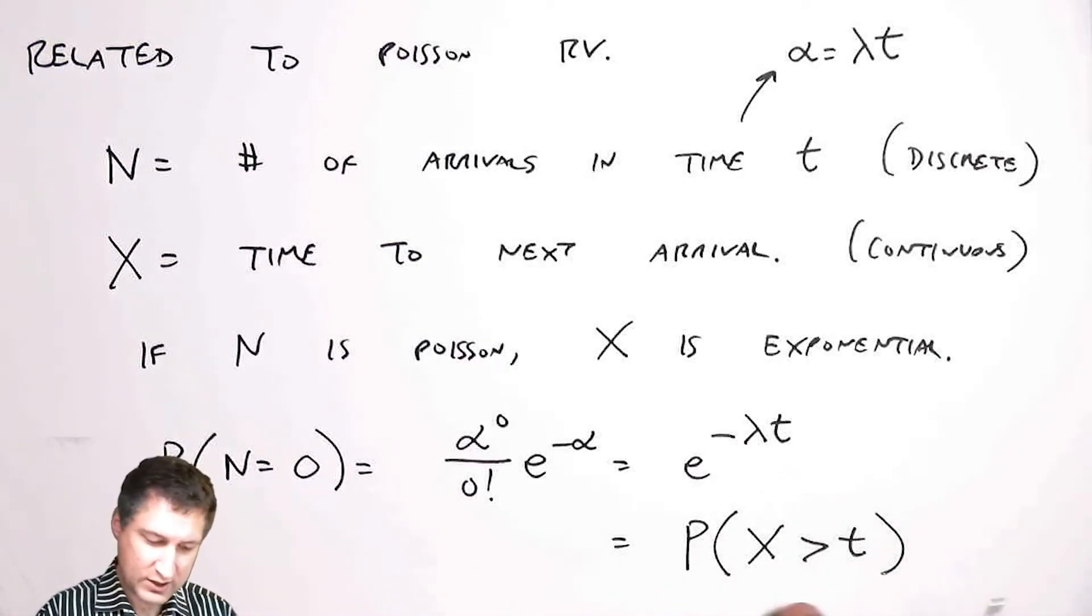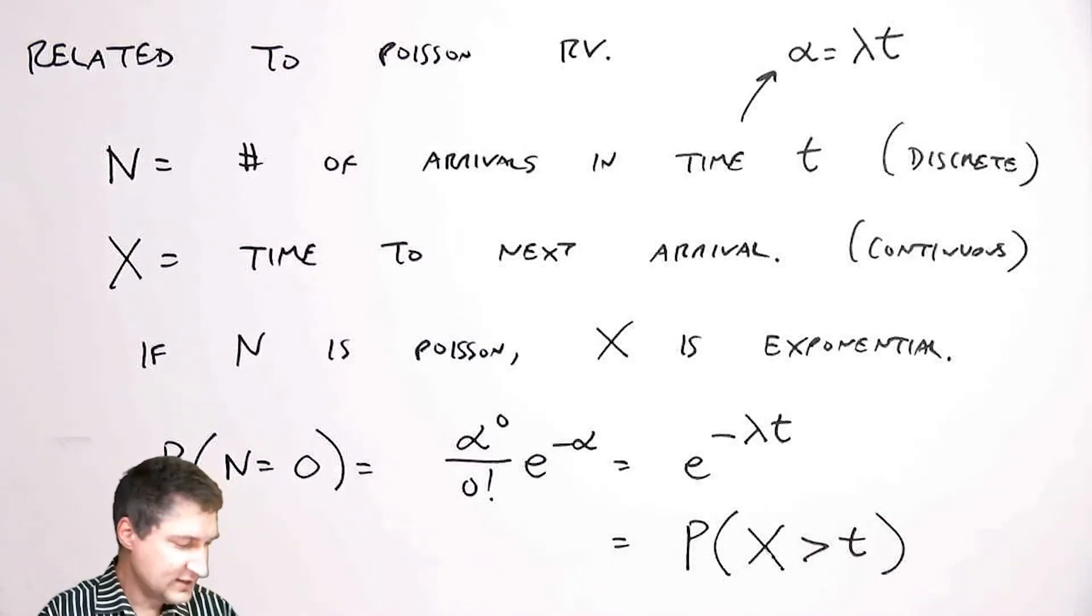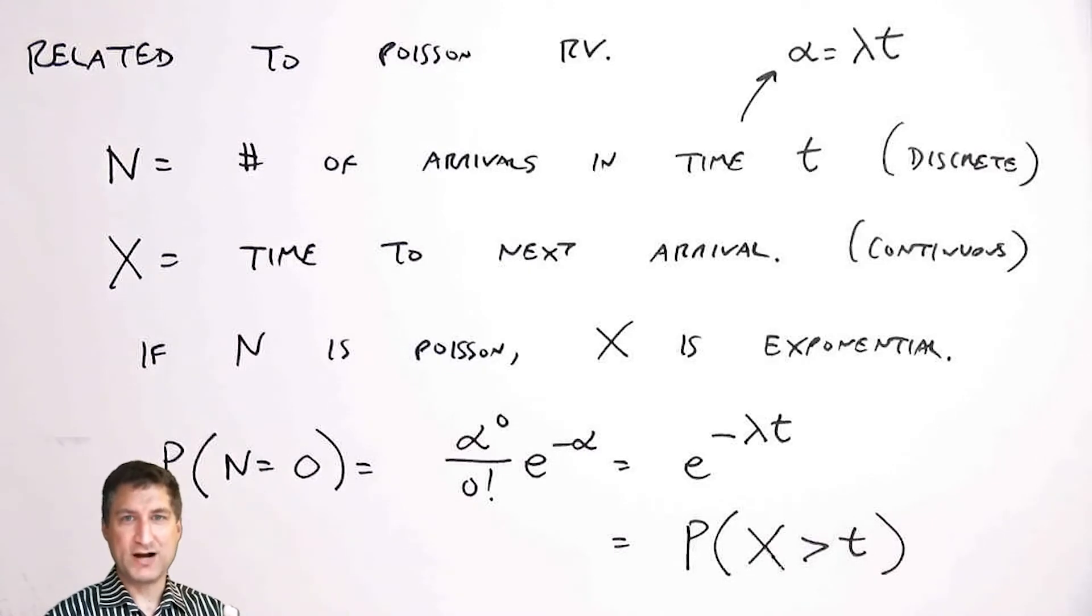The probability of this exponential random variable is greater than some value t. In a way I can think about the problem in two different ways.